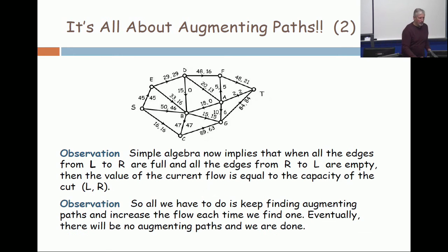Okay, now, if you simply look at the high school algebra about flows, when you have a cut, and all the edges from L to R are full, and all the edges that go backwards from R to L are empty, then the value of the current flow is equal to the capacity of this cut.